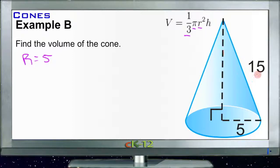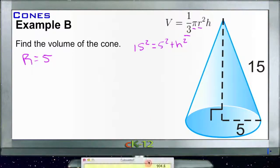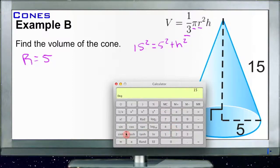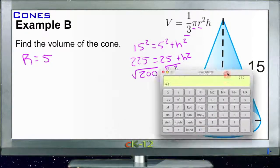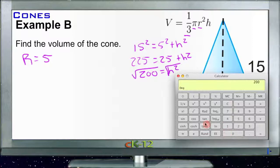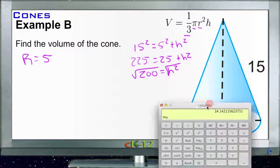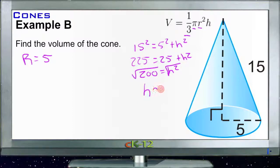We know the slant height is 15, but we don't know the height. We'll do the same trick using Pythagorean theorem: 15 squared equals 5 squared plus h squared. So 225 equals 25 plus h squared. Subtract 25 from both sides: 200 equals h squared. Take the square root and we get h equals the square root of 200, which is 14.14, so h is approximately equal to 14.